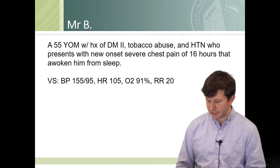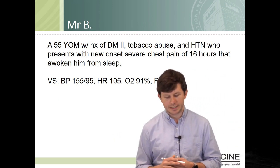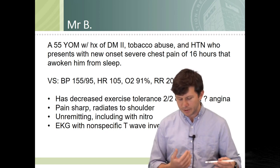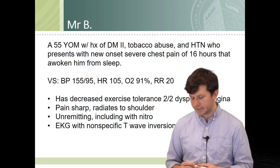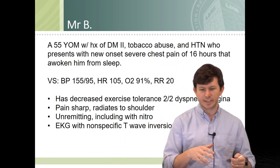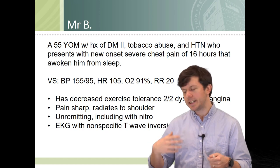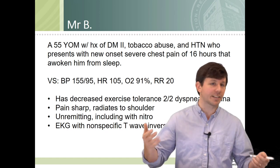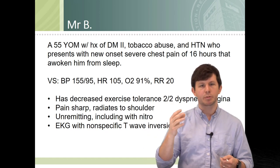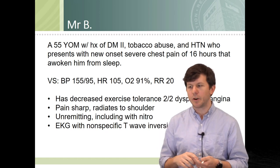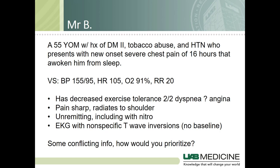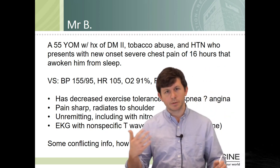Going back to Mr. B — he does have some decreased exercise tolerance with possible pain component. The pain is sharp and radiates to the shoulder. It's not relieved by nitro, and EKG findings are really nonspecific. One of the big things when you move from first and second year to third year is that on Step 1 or Step 2, when they give you a case presentation, it's really clear — there is a right answer. However, in clinical reality, patients don't always present with the classic presentation. You can't always rely on the most likely diagnosis; you also have to exclude maybe less likely diagnoses that could be missed and could kill you. MI certainly fits that category.